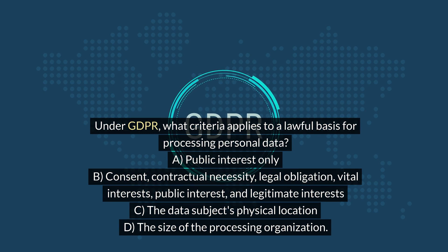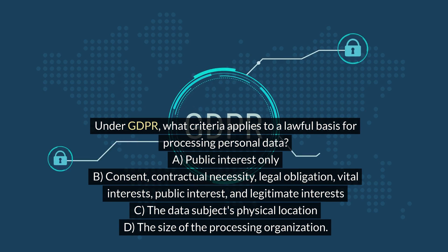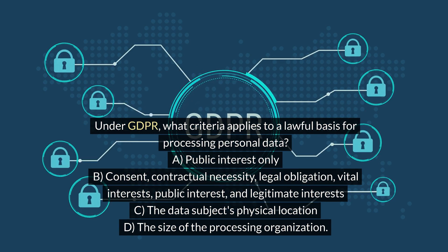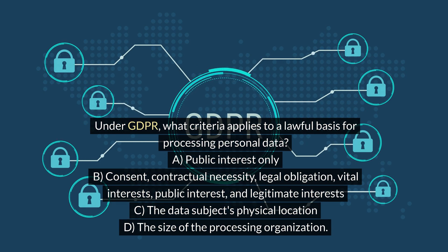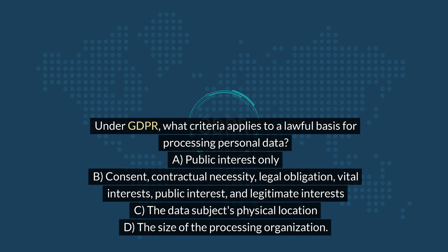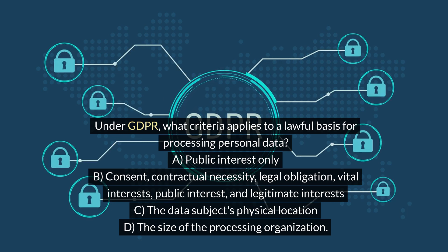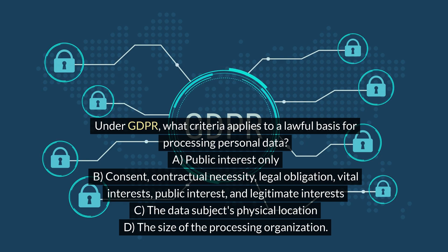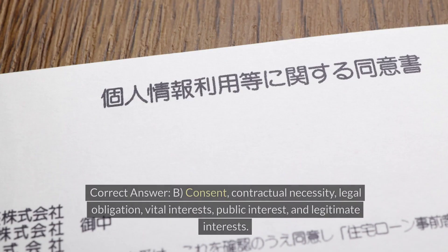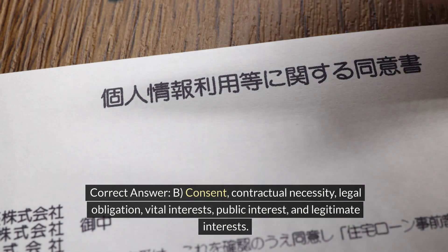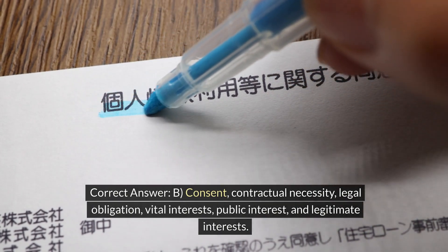Under GDPR, what criteria applies to a lawful basis for processing personal data? A. Public interest only. B. Consent, contractual necessity, legal obligation, vital interests, public interest, and legitimate interests. C. The data subject's physical location. D. The size of the processing organization. Correct answer: B. Consent, contractual necessity, legal obligation, vital interests, public interest, and legitimate interests.